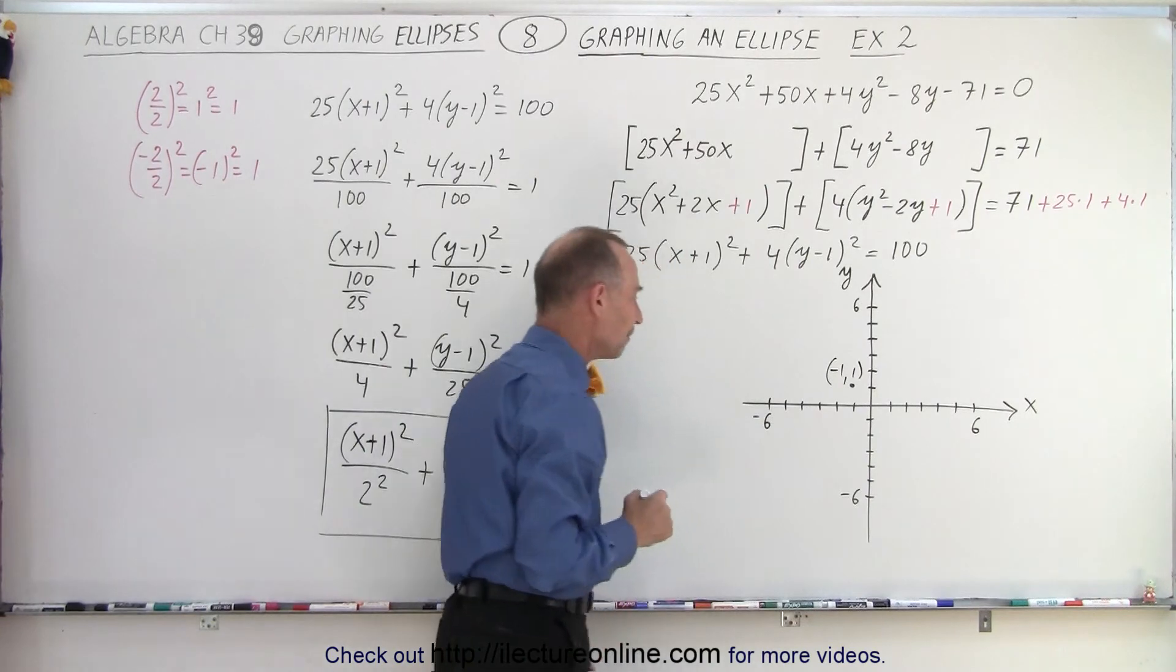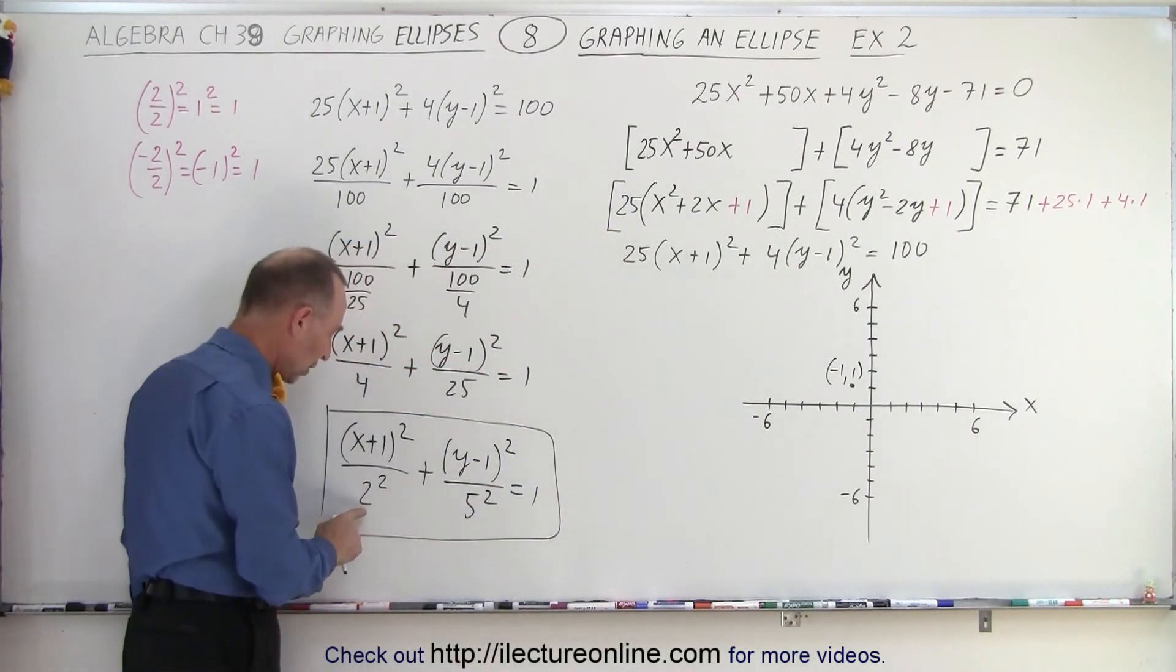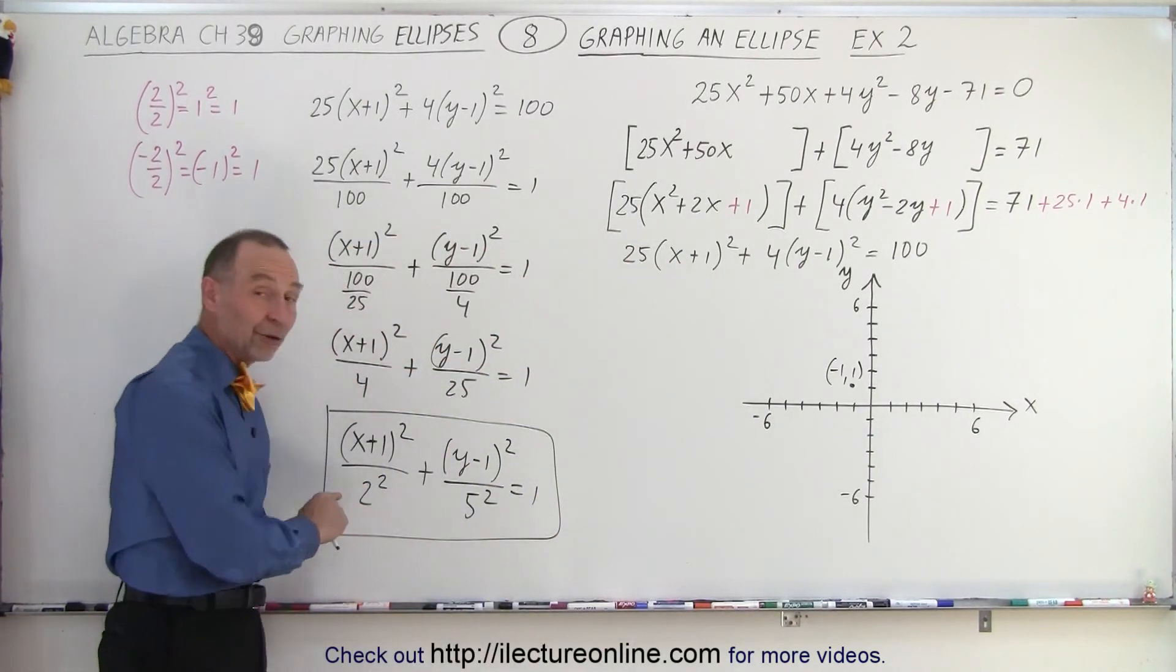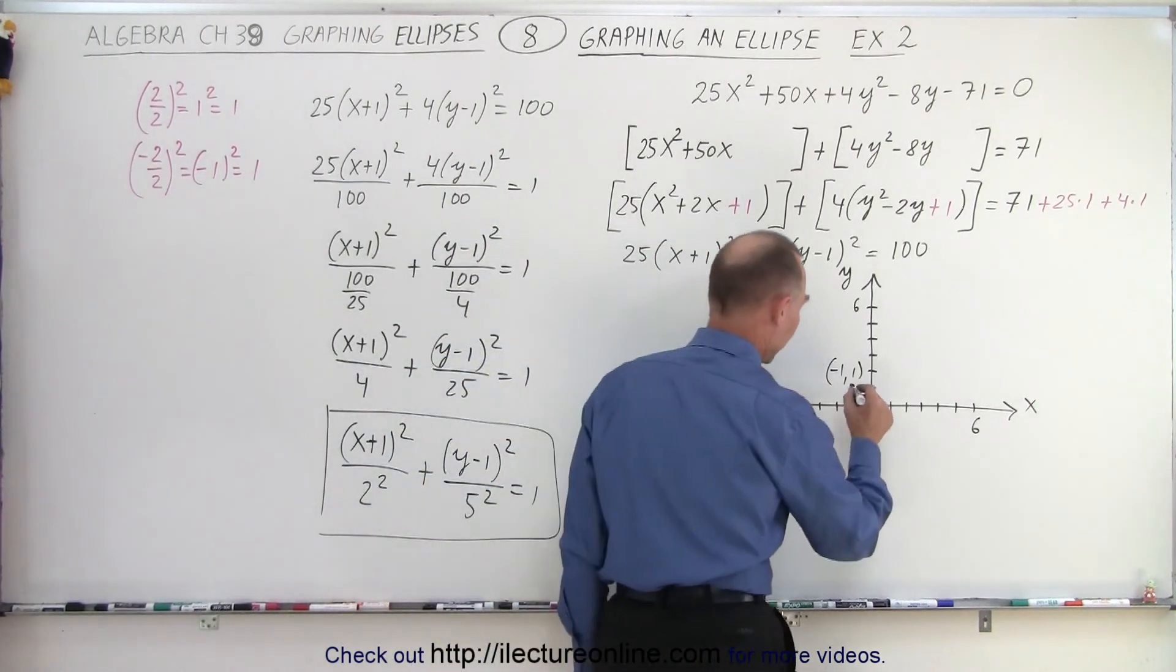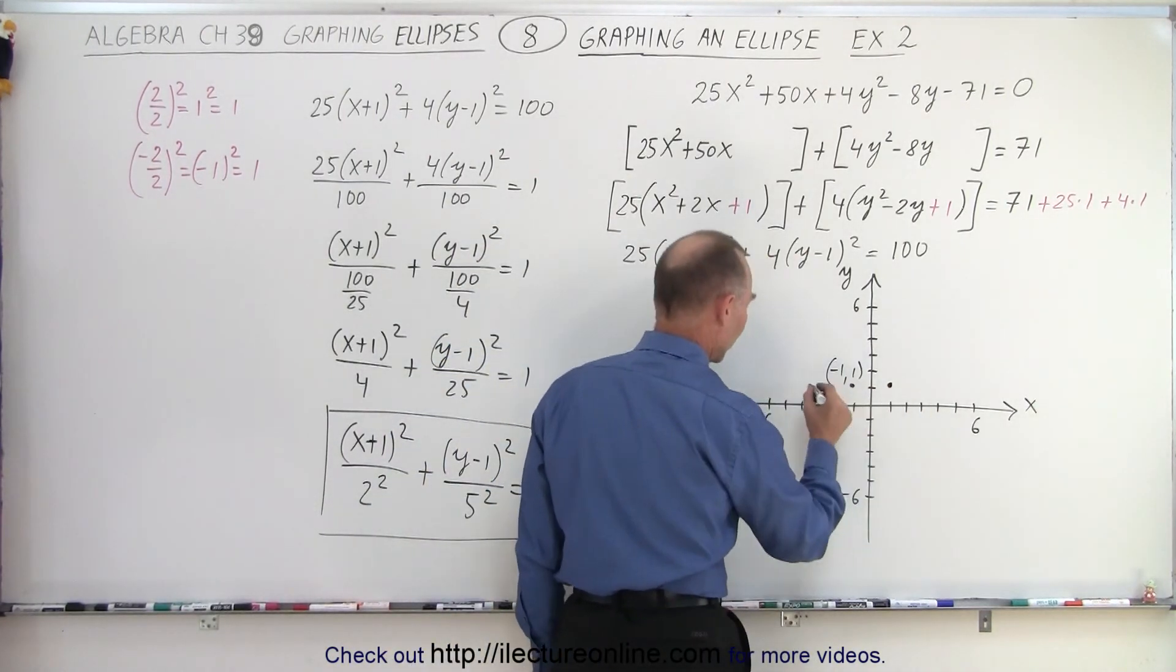Now, in the x direction we move to the right 2 units, to the left 2 units to find the points to the side. So 1, 2 to the right, 1, 2 to the left.